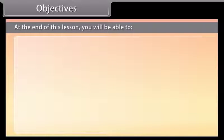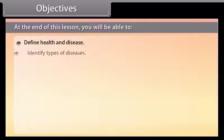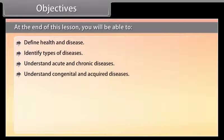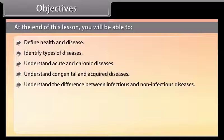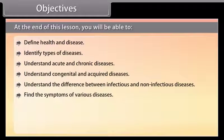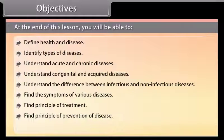Objectives: At the end of this lesson, you will be able to define health and disease, identify types of diseases, understand acute and chronic diseases, understand congenital and acquired diseases, understand the difference between infectious and non-infectious diseases, find the symptoms of various diseases, find the principle of treatment, find the principle of prevention of disease, and understand vaccination.